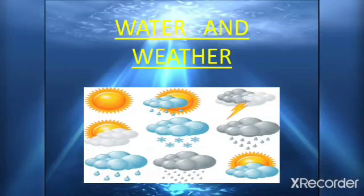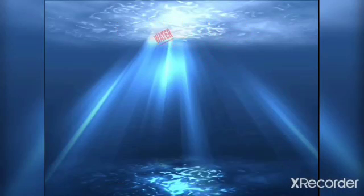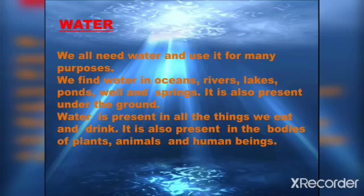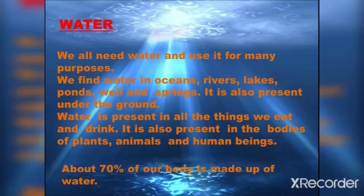Hello dear children, here is your chapter: Water and Weather. Children, we all need water and use it for so many purposes. Plants and animals also need water. We find water in oceans, rivers, lakes, ponds, wells, and in springs. It is also present under the ground. Water is present in all the things we eat and drink, and it is also present in the bodies of plants, animals, and human beings.